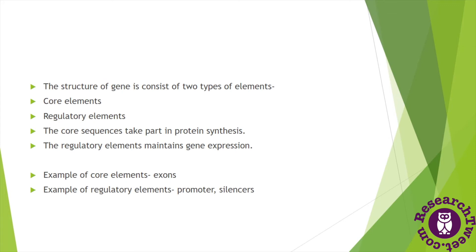Examples of core elements are exons, or DNA coding sequences. These exons have the ability to decode for the polypeptide chain and take part in the process of translation. Regulatory elements consist of promoters and silencers, which take part in the process of gene expression. They also help to increase the length of the gene in eukaryotic organisms, which enhances the chances of crossing over.